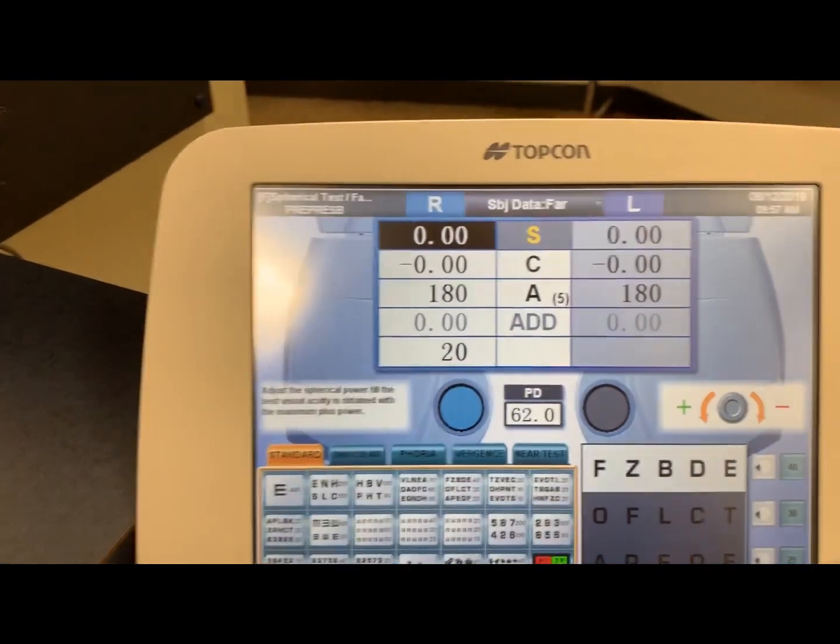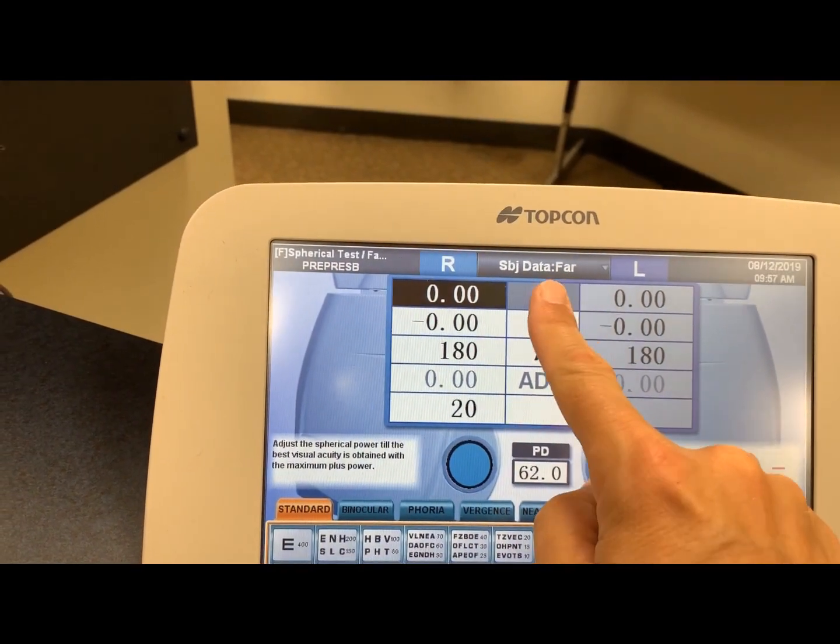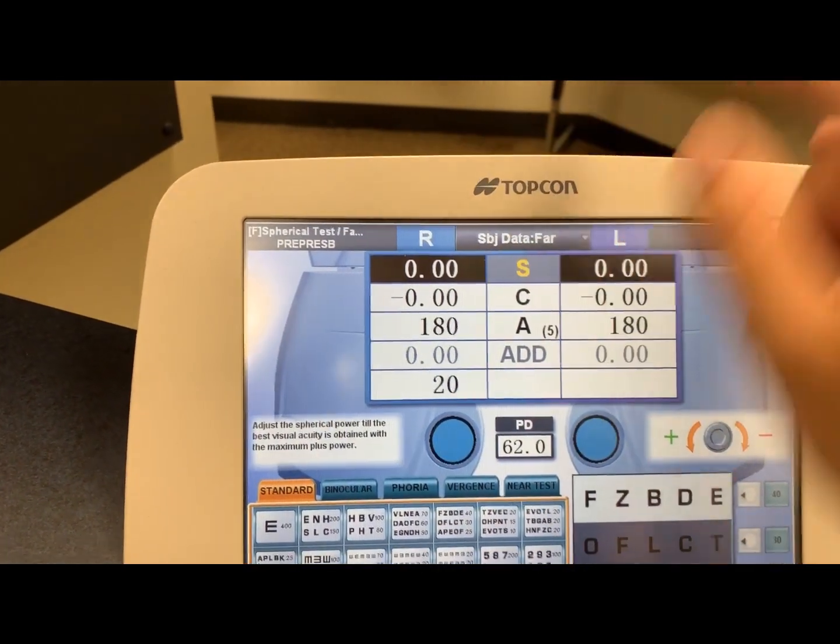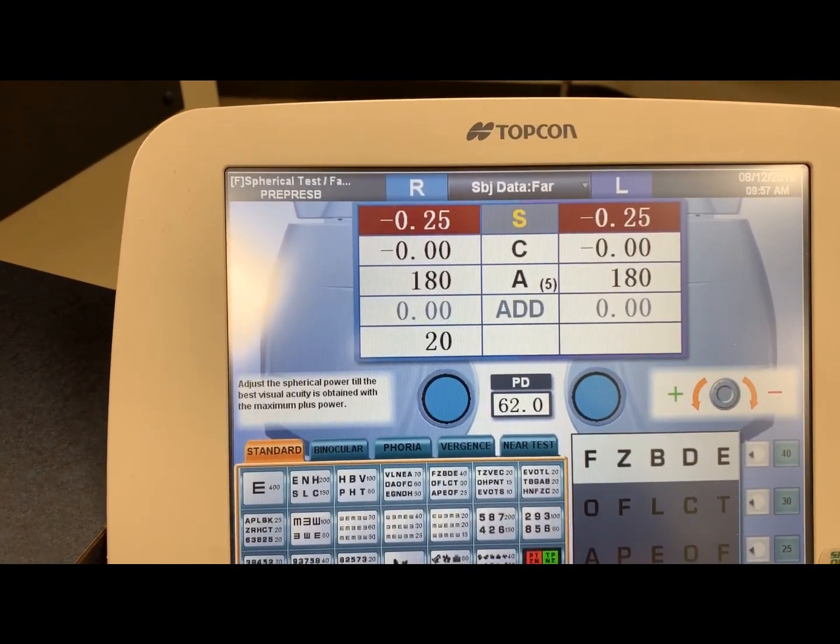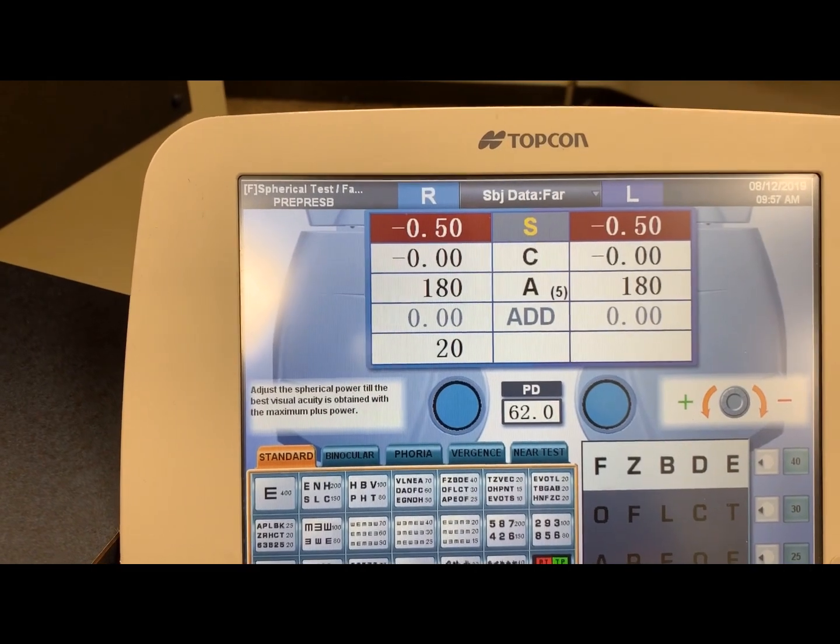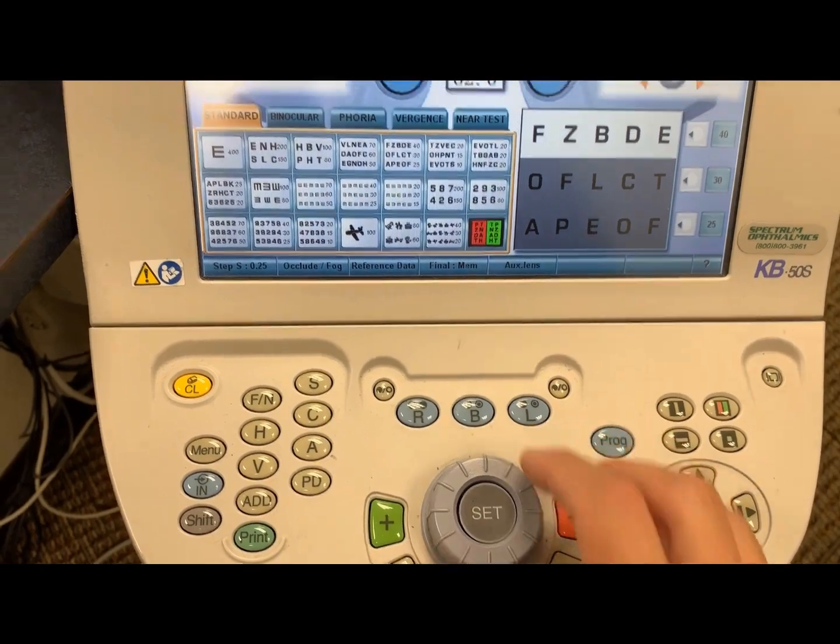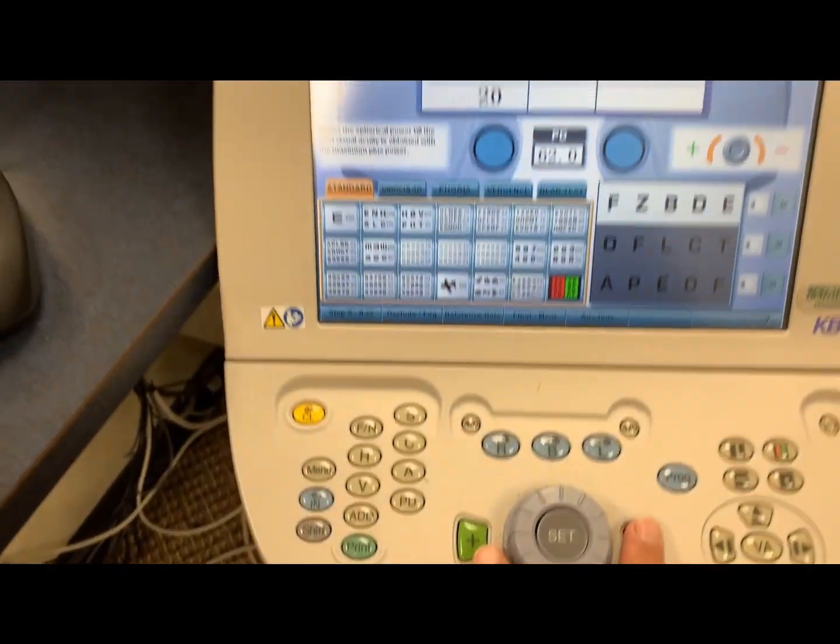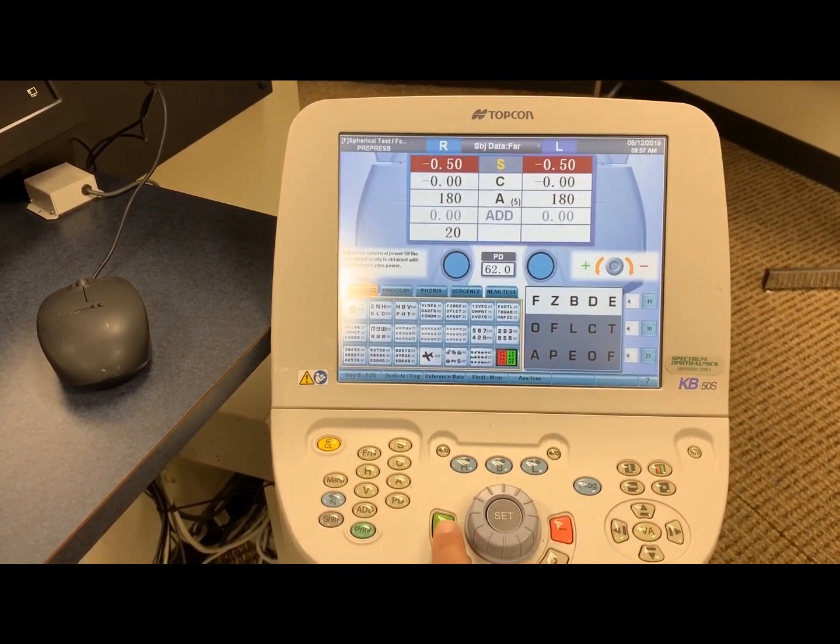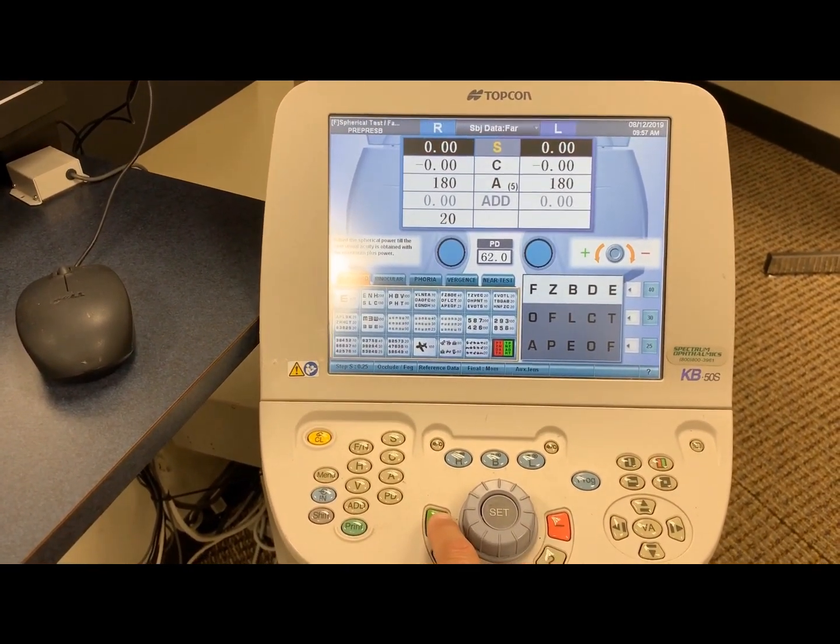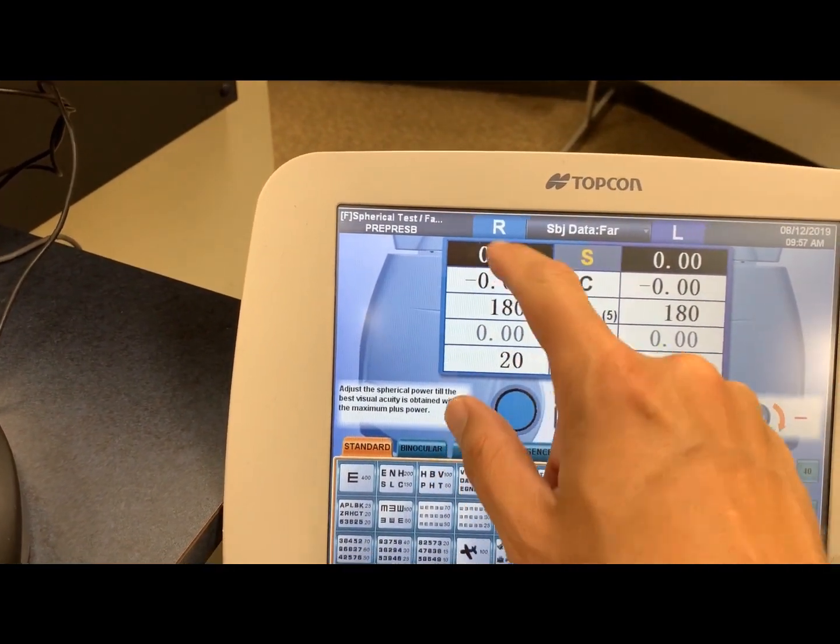At this stage, if you're wanting to adjust the spherical power, if you want to adjust both eyes, you would push the S in the center. You'll notice both black out. That tells you you're ready to adjust the power in front of each. Again, like with the Marco, turning clockwise increases the minus. Turning counterclockwise on the knob increases the plus. You can also use the two buttons at the bottom. The minus button, obviously, will give you more minus, whereas the plus will give you more plus. If you want to do just one eye, again, just like the Marco, you push just the eye that you want to test. The other side grays out, and you're able to begin adjusting just that eye.